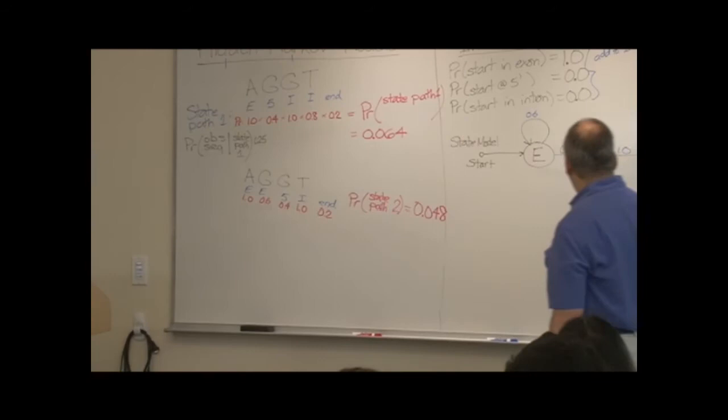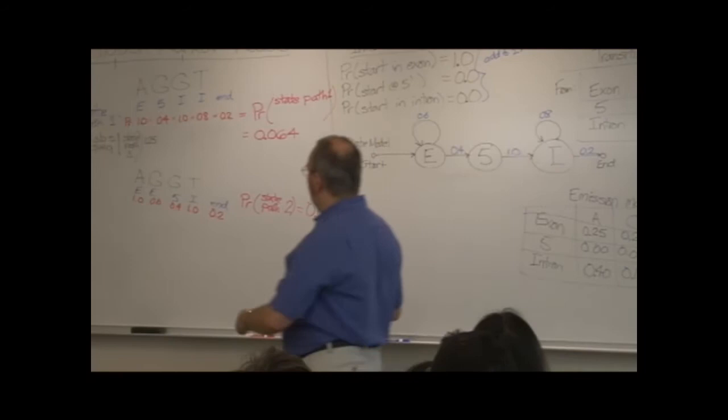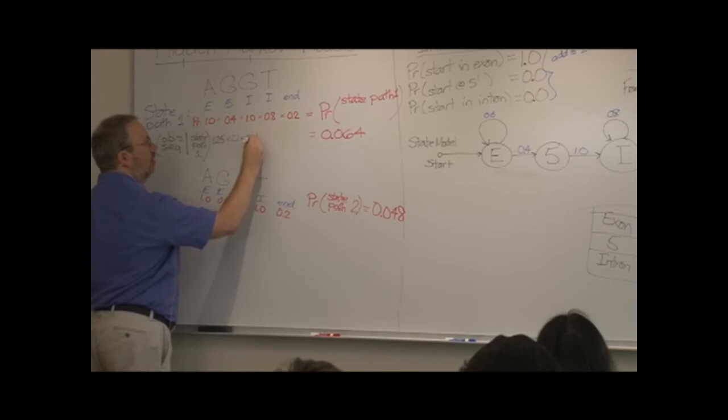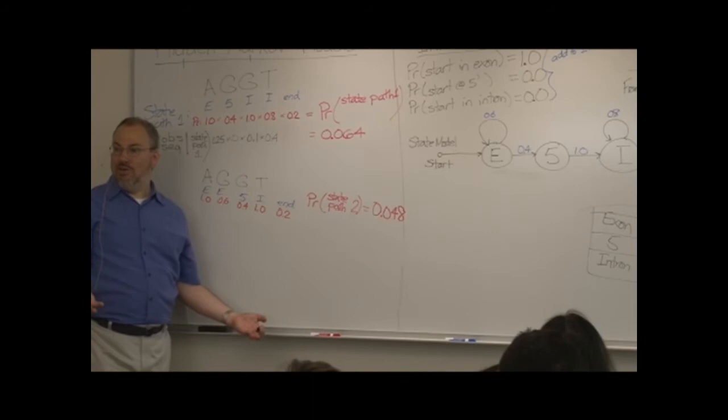Under the assumption that this first guanine is the five prime splice site... Well, given that we're in a five prime splice site, what's the probability of emitting a guanine? One. Point one. Can you give me the next probabilities in an intron of emitting a guanine? Point one. In an intron emitting a thymine? Point four. The end, we don't worry about, because the end, by definition, does not emit a nucleotide.